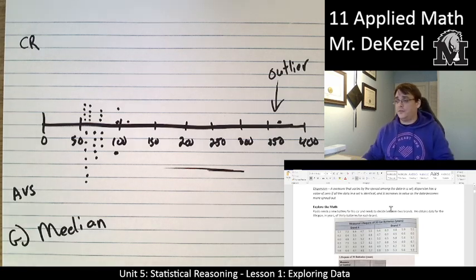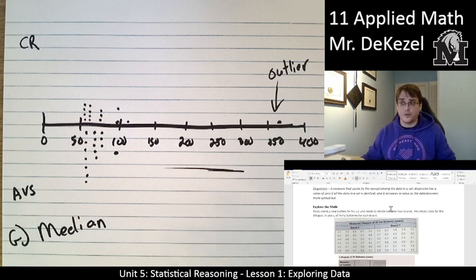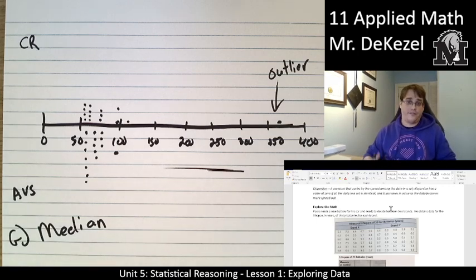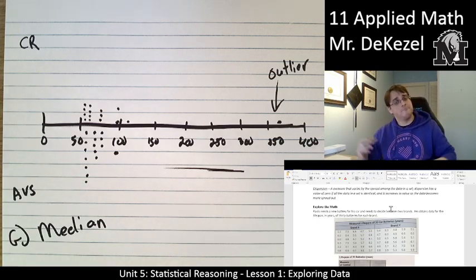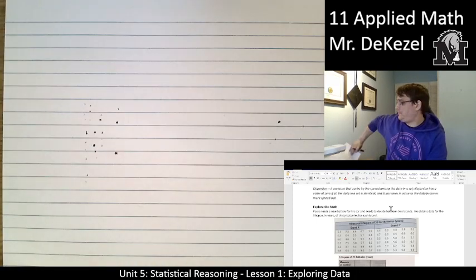Another definition: dispersion. Dispersion is a measure that varies by the spread among the data in the set. Essentially, it is a measure of the range. The highest number and the lowest number. How far apart are they? How dispersed are they? If dispersion has a value of zero, all of the values are identical. They're all the same. Five, five, five, five, five. There's no dispersion. If you have five, ten, fifteen, twenty, you have some difference. You have some dispersion. It increases in value as the data gets more spread out.